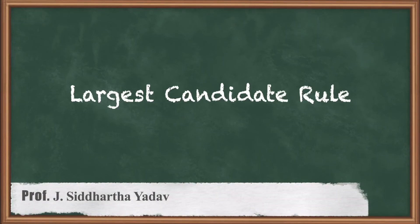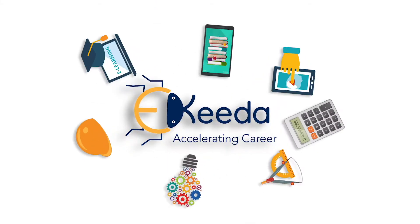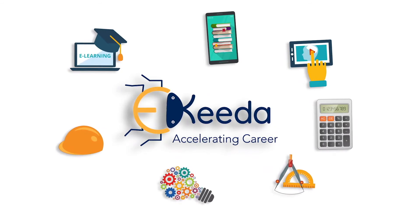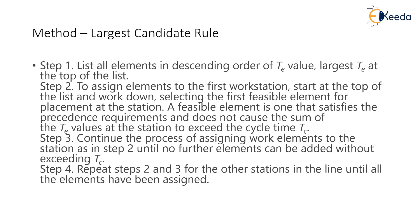Hi all, welcome to this course in production planning and control. Today we'll be learning about the Largest Candidate Rule. In step one, we list all the elements in descending order of their assigned times. The largest task time (te) is placed at the top of the list, arranging them from descending to final order.